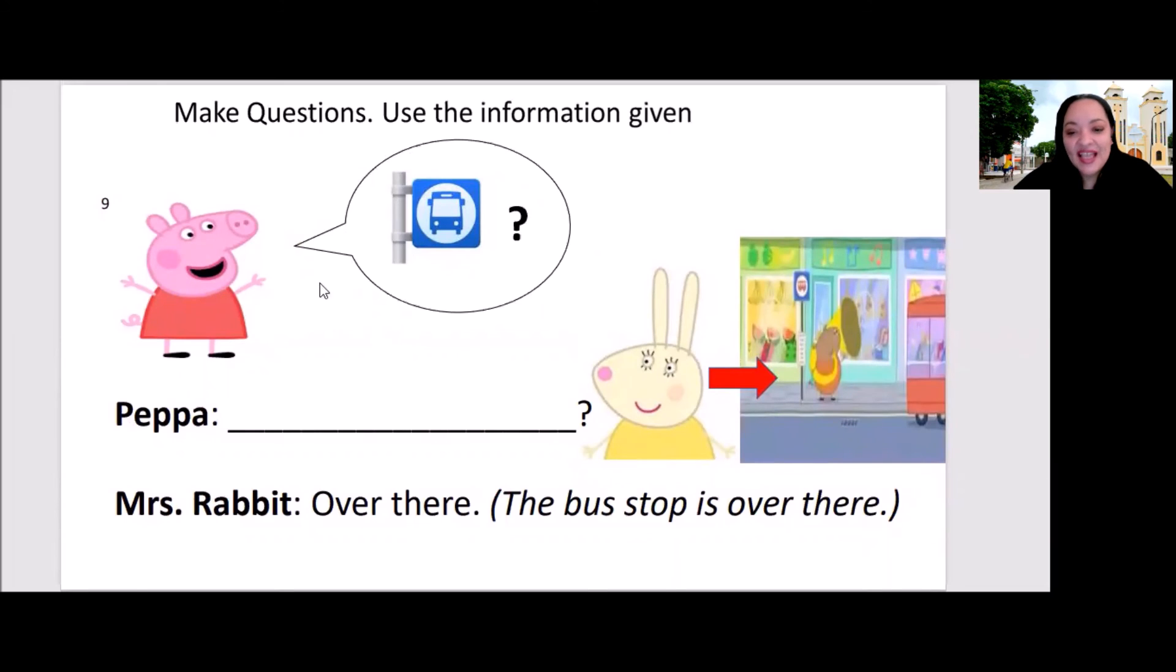So, we have Peppa and we have Mrs. Rabbit. So, the answer that Mrs. Rabbit gives is over there. The bus stop is over there. What did Peppa ask? Ready? Go. All right. Very good. So, she asks Mrs. Rabbit, Where is the bus stop? Very good, guys. Now, it's getting easier, right? Yes.